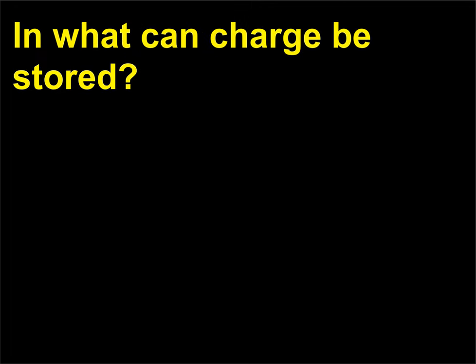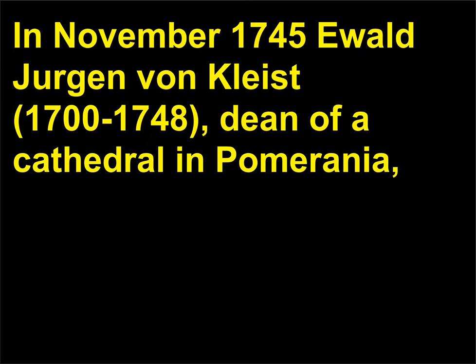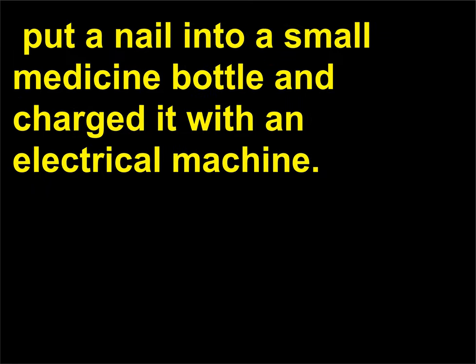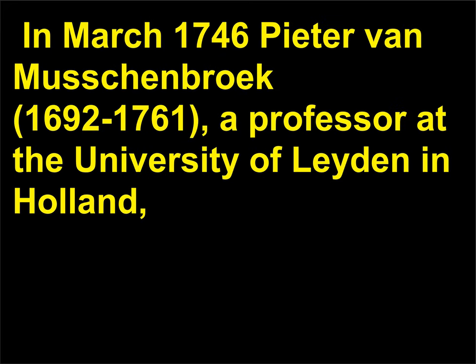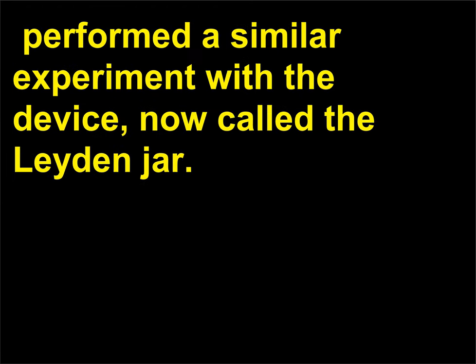In what can charge be stored? In November 1745 Ewald Jurgen von Kleist, 1700-1748, dean of a cathedral in Pomerania, put a nail into a small medicine bottle and charged it with an electrical machine. When he touched the nail he received a strong shock. In March 1746 Peter van Musschenbroek, 1692-1761, a professor at the University of Leiden in Holland, performed a similar experiment with the device, now called the Leyden jar.